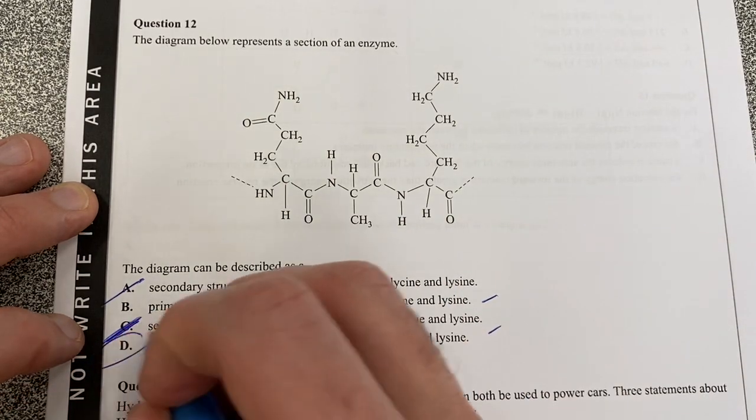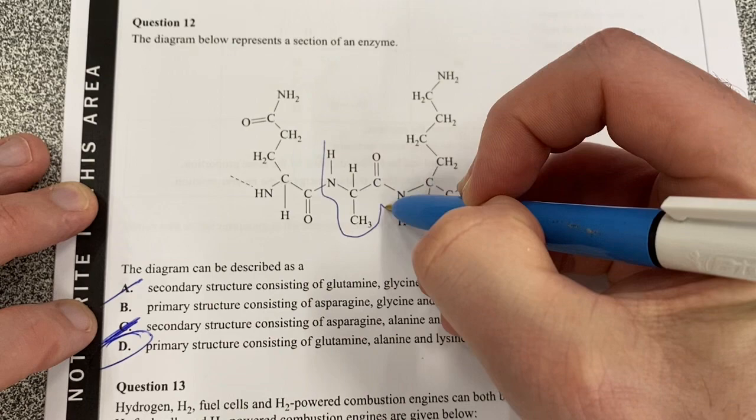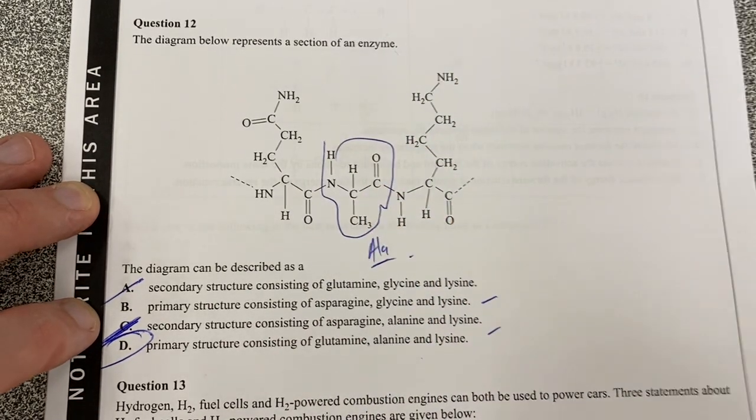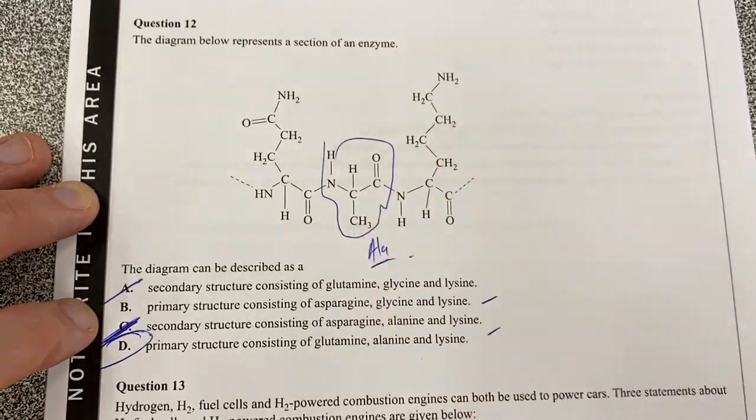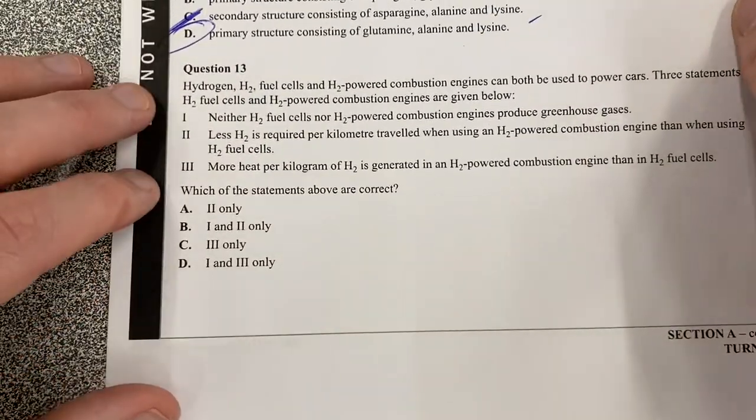I know that so therefore it's going to be D because this guy here looking into my data booklet is ALA, not GLI. GLI is our first one which has our hydrogens on the other side. Moving on to question 13.